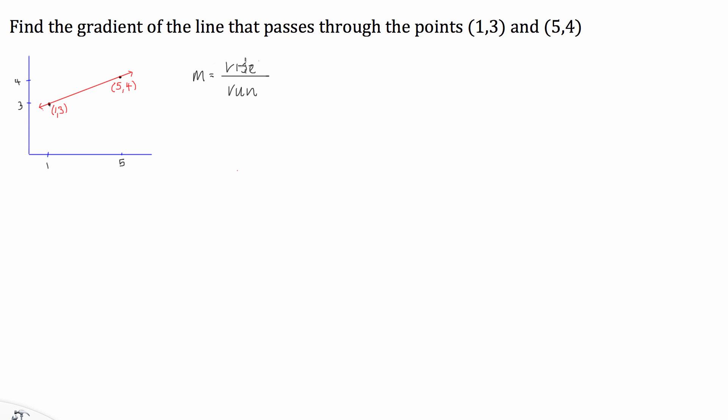Now, the rise is the amount that y changes, or the y value on each of these points changes, from point 1 to point 2. So, the way we can work out how much the y value changes is we can get the second point, or we'll call this y2, and subtract the first point, y1.